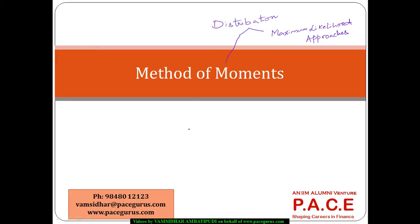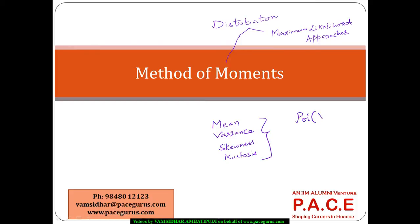Whenever we talk about the method of moments, the moments are nothing but mean, variance, skewness, and kurtosis. By determining these values for my data, I should be able to estimate the parameters. For each distribution there are a set of parameters — for a Poisson distribution the parameter is lambda, for a binomial distribution the parameters are n and p, and for a normal distribution the parameters are mu and sigma squared. Estimating these values by computing mean, variance, skewness, and kurtosis is what we call the method of moments.